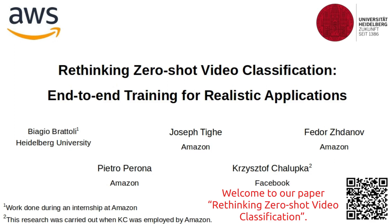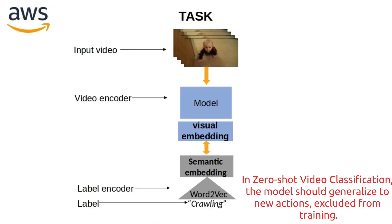Welcome to our paper, Rethinking Zero-Shot Video Classification. In Zero-Shot Video Classification, the model should generalize to new actions excluded from training.